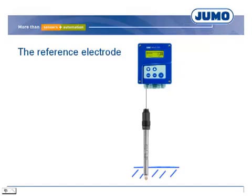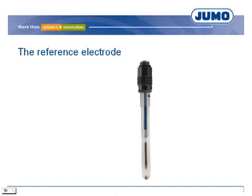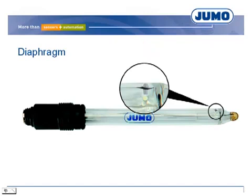The potential on the pH electrode is a measure for the pH value, but the circuit has to be closed. The connection is realized by the reference electrode. The reference electrode transfers the potential of the solution to the head of the electrode via diaphragm, electrolyte, and conductive system. The diaphragm is the connection between solution and electrolyte. The more permeable the diaphragm, the more reliable the measurement — but electrolyte consumption rises and electrode life is reduced.